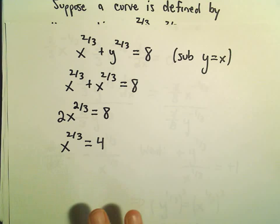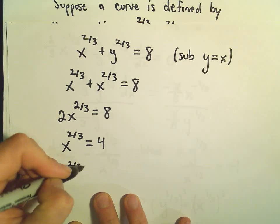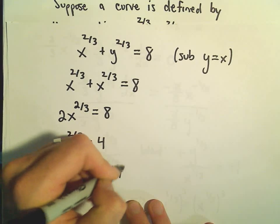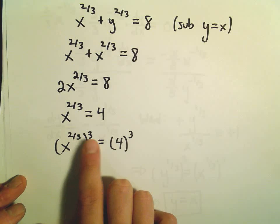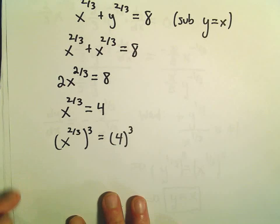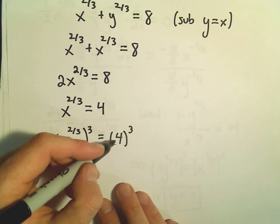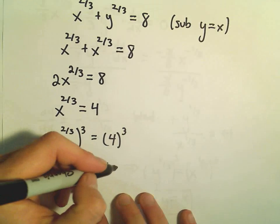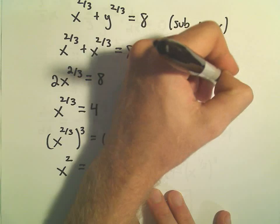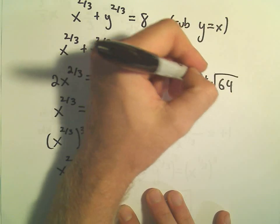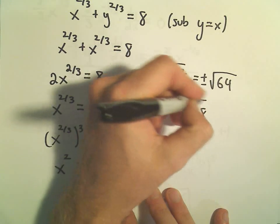Now a couple of things to be careful about. To get rid of the fractional exponent, we can cube both sides. Think about multiplying the exponents: two-thirds times three gives us just x squared. Four to the third power — four times four is sixteen, times another four — gives us sixty-four. Last but not least, to get rid of the square, we can square root both sides. We have to remember to include both positive and negative roots, so we get x equals either positive or negative eight.